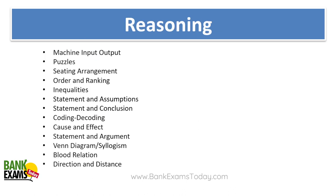In reasoning ability, you can expect one puzzle or seating arrangement worth 5 marks. The remaining questions will cover: machine input-output, order and ranking, inequalities, statement and assumptions, statement and conclusion, coding-decoding, cause and effect, statement and argument, Venn diagrams, blood relations, and direction sense test.